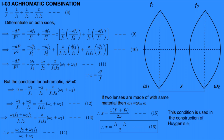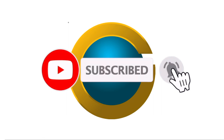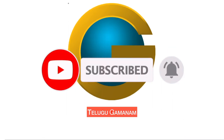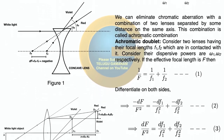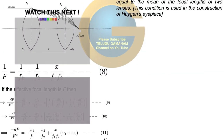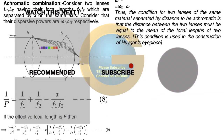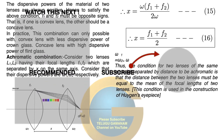This system completely eliminates chromatic aberration. This condition is used in the construction of the Huygens eyepiece. Please subscribe to our Telugu Gamanum channel for more lecture videos and click the bell icon for notifications. If you want lecture notes for this video, click the description link below. Thank you for watching — see you in the next lecture. Have a nice day.